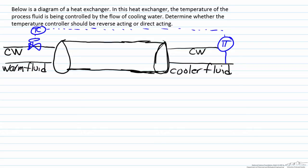To show this we are going to use an example of a heat exchanger where we are trying to cool a process fluid by the use of cooling water. We are going to control the temperature of the process fluid by the flow rate of cooling water as indicated by the diagram.